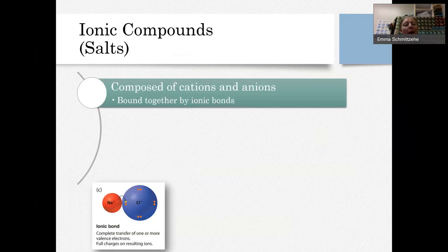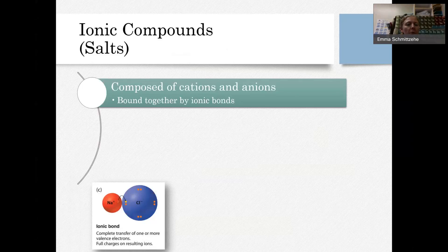When you have an ionic compound, it is something composed of cations and anions. Those cations and anions are bound together by what we call ionic bonds. An ionic bond really is just an electrostatic attraction between the ions — similar to the attraction between a magnet and a metal surface, or between two magnets.